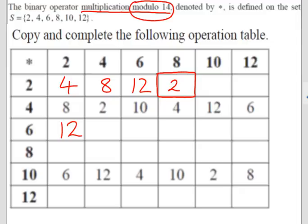When we do this cell, 2 times 10 is 20, the remainder is 6. In this one, 2 times 12 is 24, the remainder is 10.